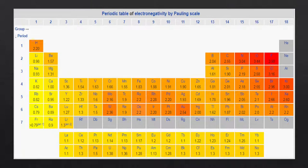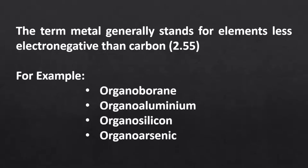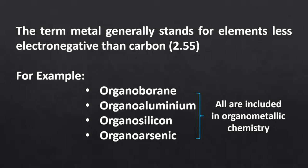Here is a periodic table with the electronegativity of each element. The electronegativity of carbon is 2.55, and almost all elements — whether from the S block, D block, or F block — have lesser electronegativity than carbon. Thus they all can form an organometallic compound with carbon. Moreover, there are some elements in the P block like boron, aluminium, silicon, arsenic, etc., which also have lesser electronegativity than carbon. We can also define organometallic compounds as those compounds where the metal or metalloids are directly bonded with the carbon atom of an organic moiety.